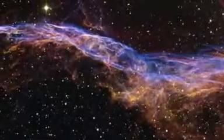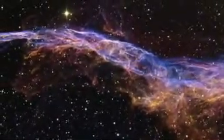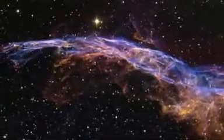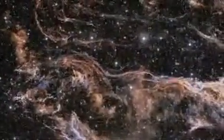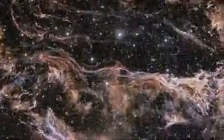The intertwined rope-like filaments of gas in the Veil Nebula result from the enormous energy released as the fast-moving debris from the supernova explosion plows into the surroundings and creates a shock front.